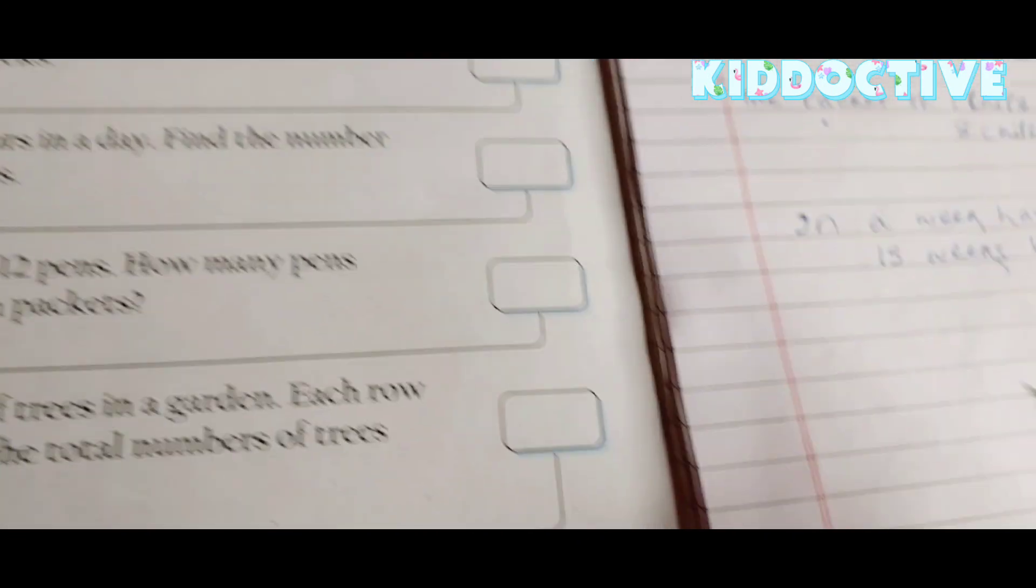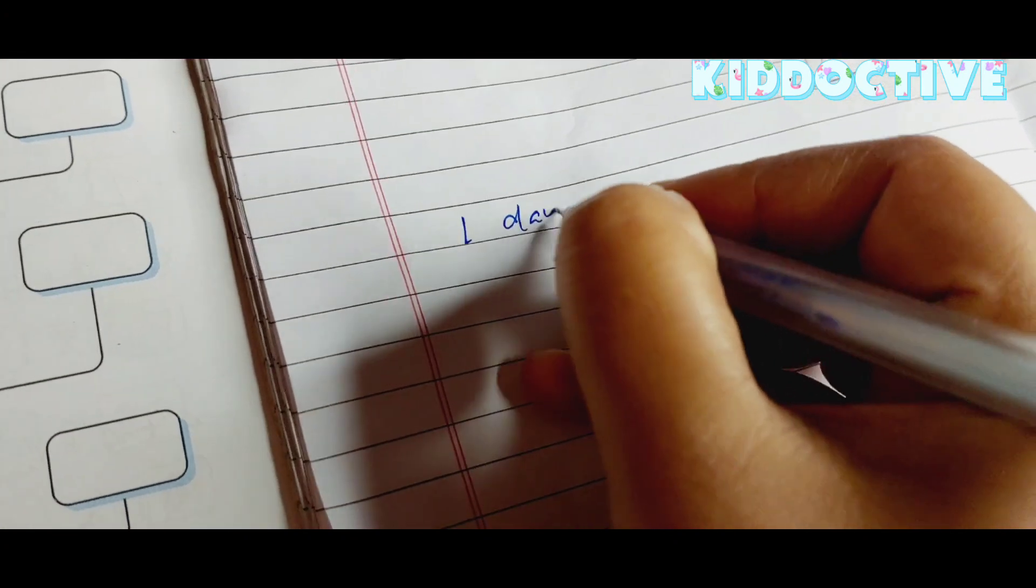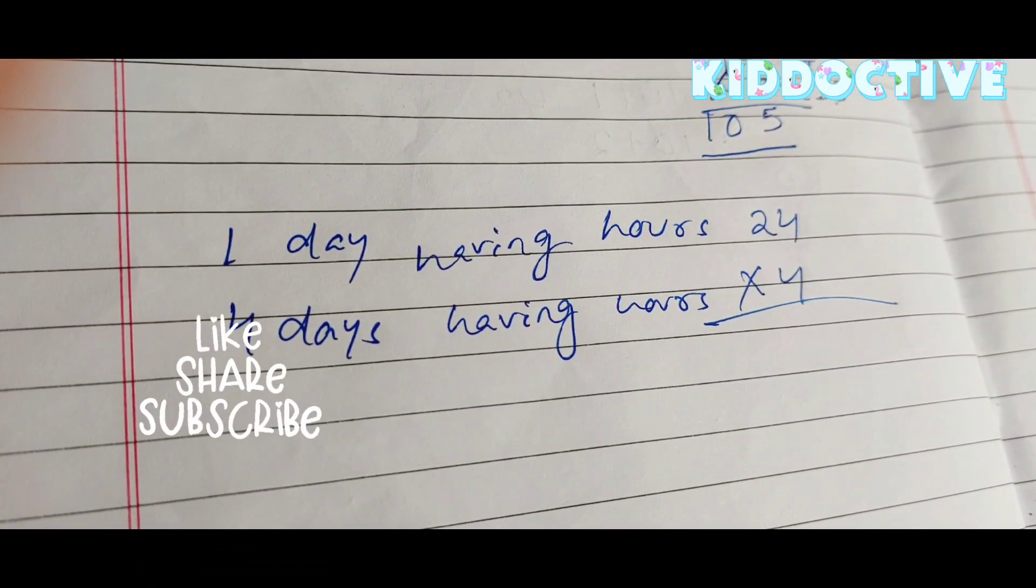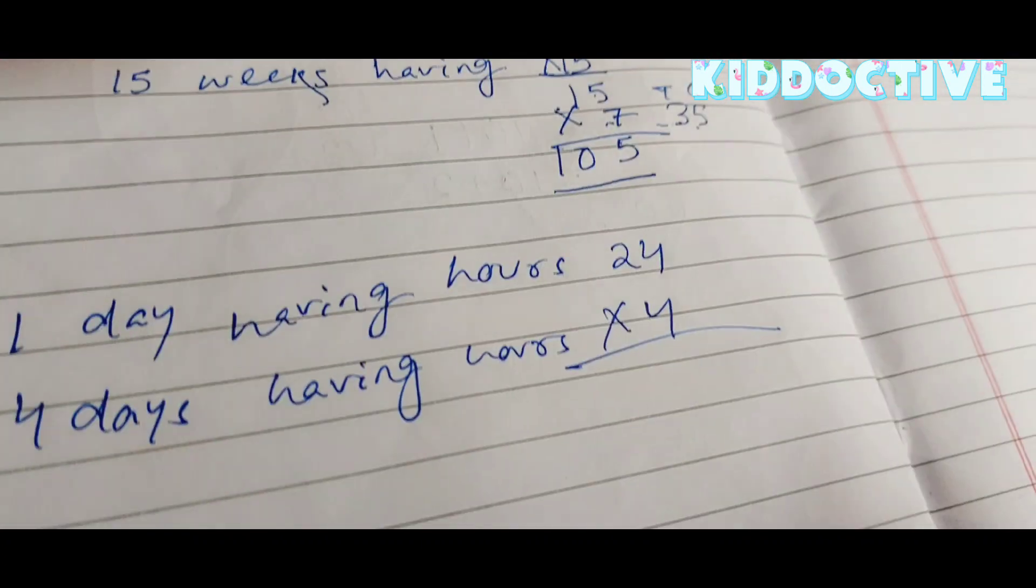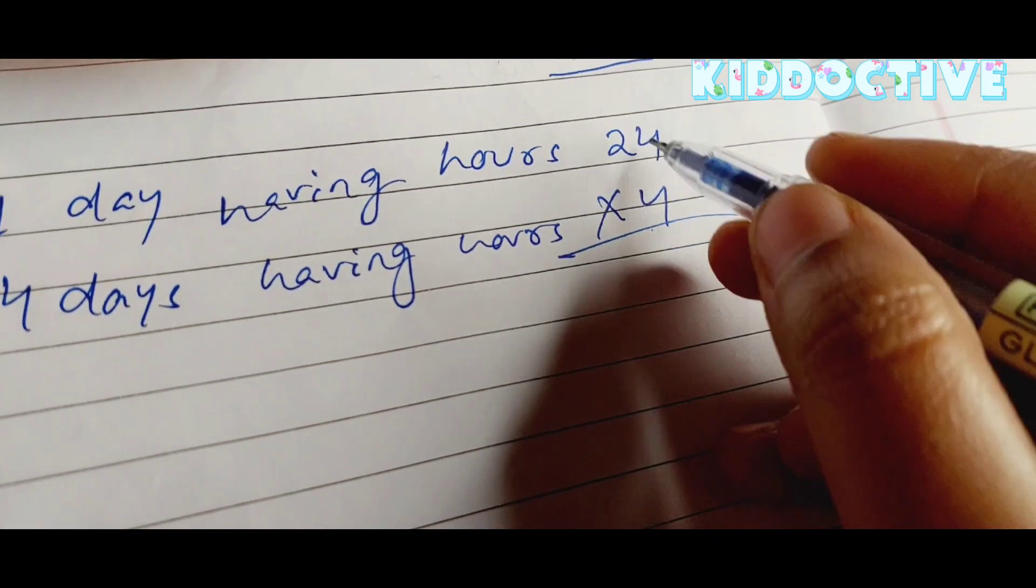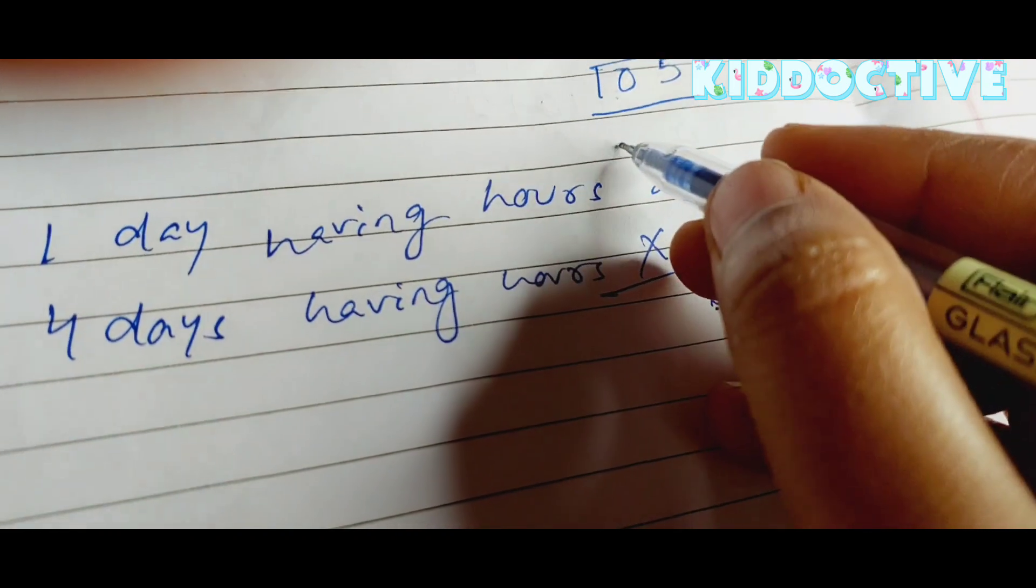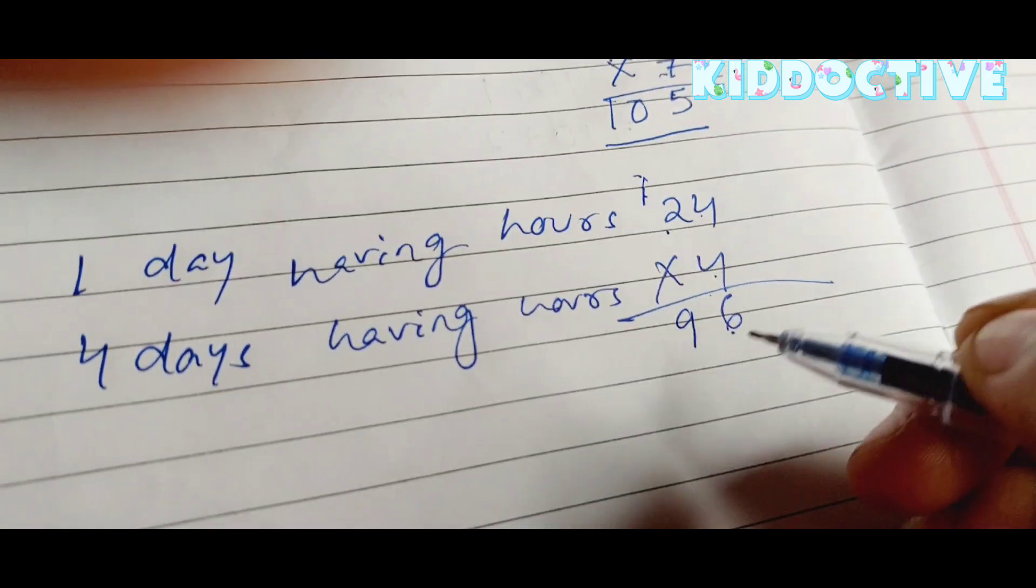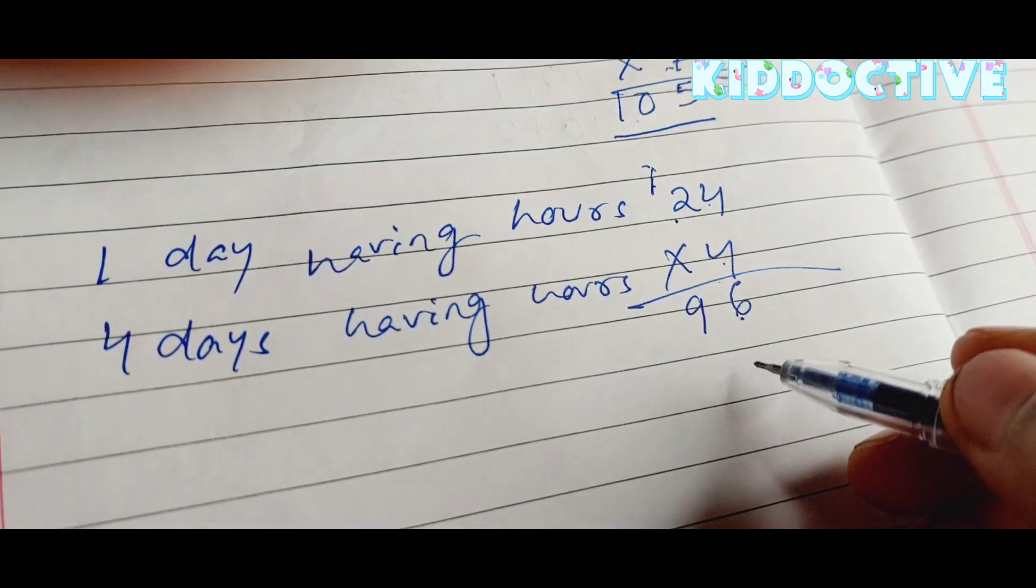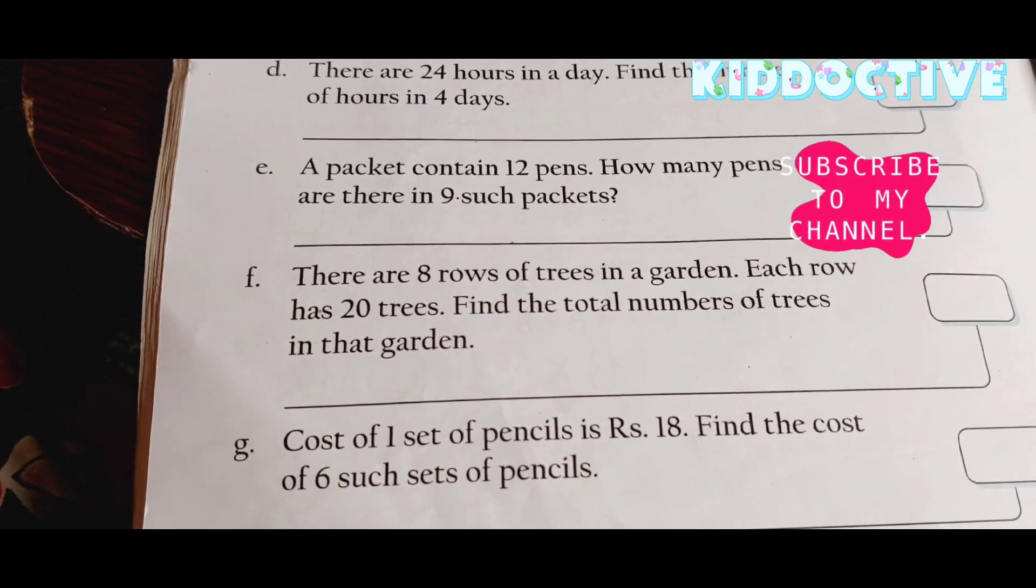The number of hours in 4 days: one day has 24 hours, so 4 days have 24 multiplied by 4. Four fours are 16, so we are going to write here 6 and 1 we are going to carry here. Four twos are 8, 8 plus 1 is 9. So 4 days have 96 hours.